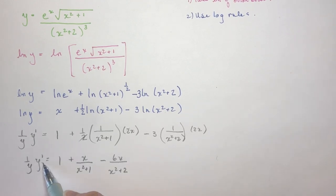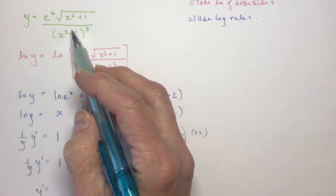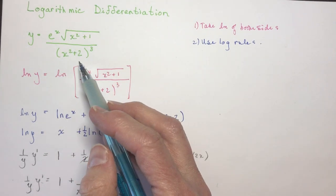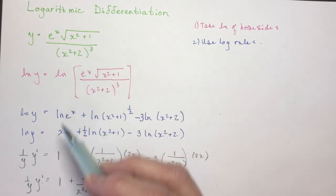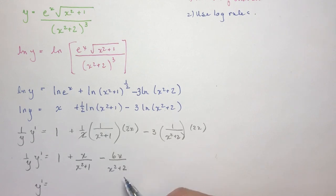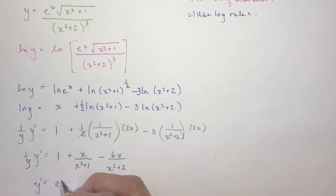And finally, I just want y prime. So if I divide by 1 over y, that's like multiplying by y. Multiply by y here, multiply by y on this side. So remember, what is y? Y is this green equation up here. So I'm just going to rewrite that in front and put everything else in brackets and I'm done.